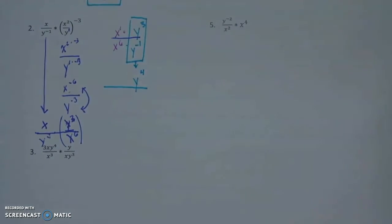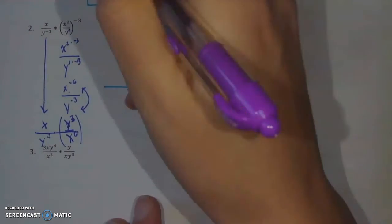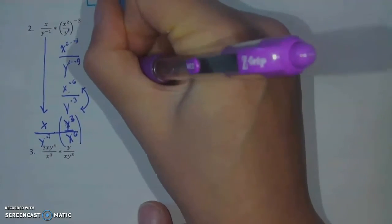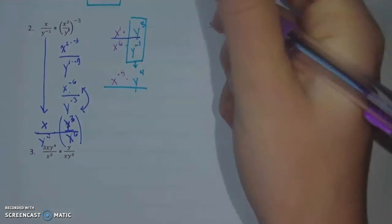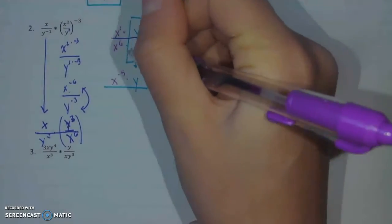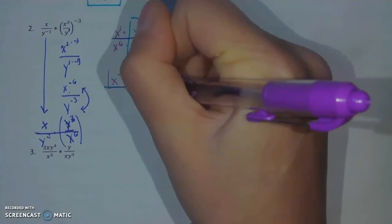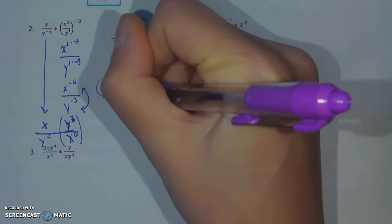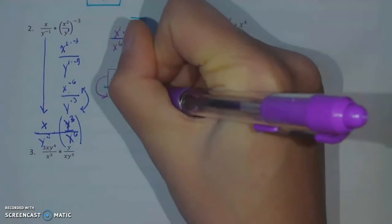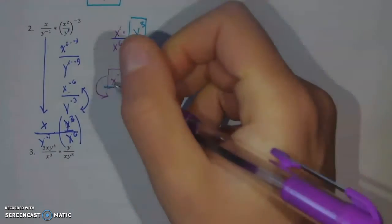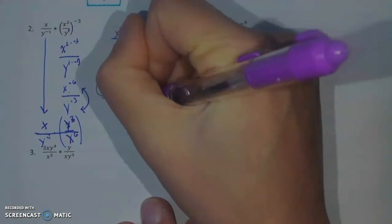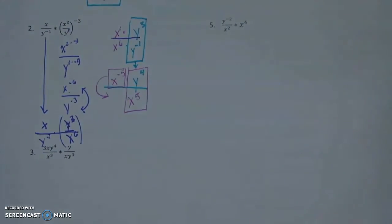Over here, I've got x to the 1st minus 6, which is going to give me x to the negative 5th. Now technically, I've simplified it. But remember, we don't like negative exponents. So I'm going to move this x to the other part of the fraction so I can get rid of my negative. So that leaves me with a final answer of y to the 4th over x to the 5th.